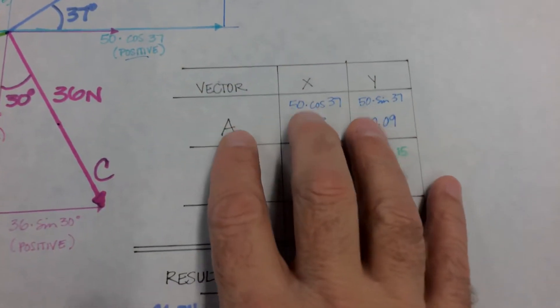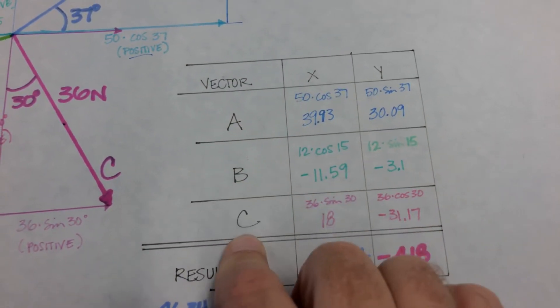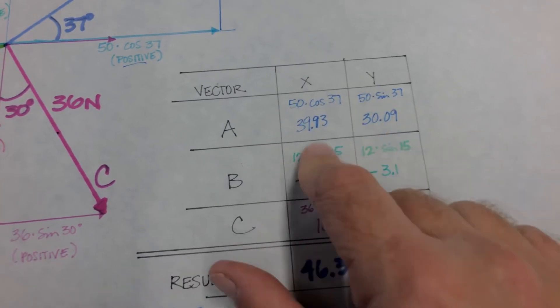So anyway, what I suggest you do is develop a little table with the vectors A, B, and C, and the X and Y components.